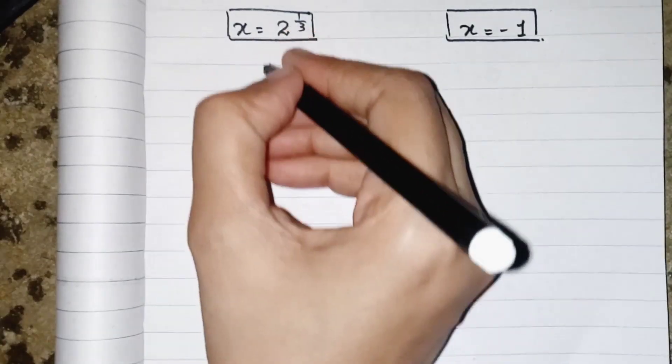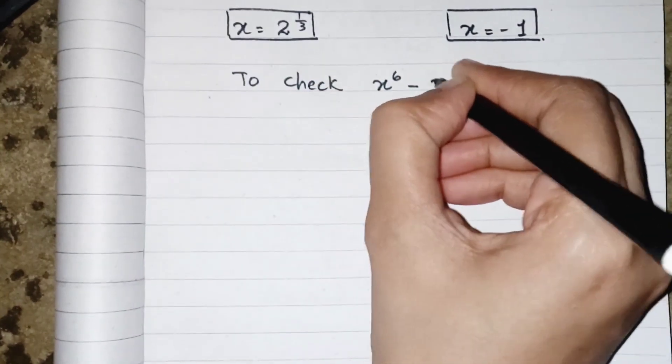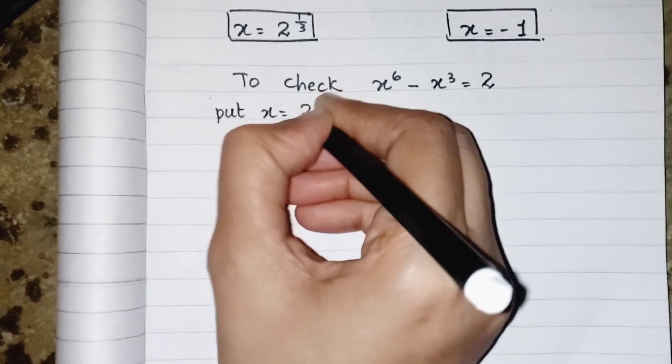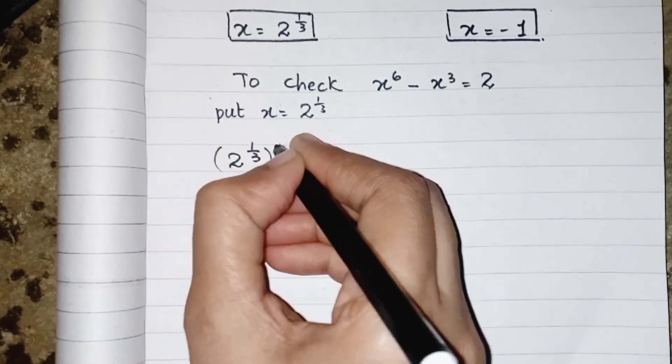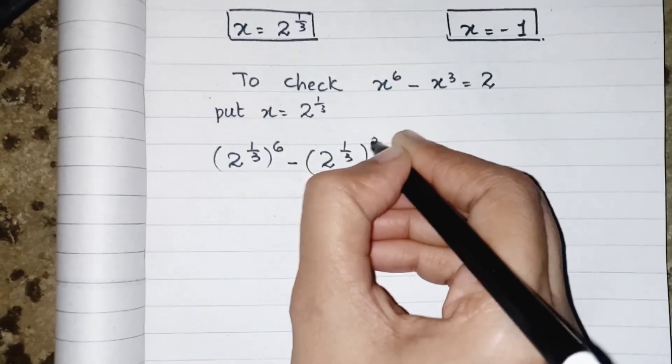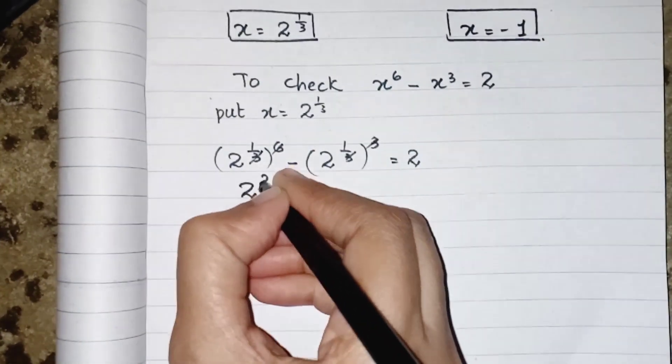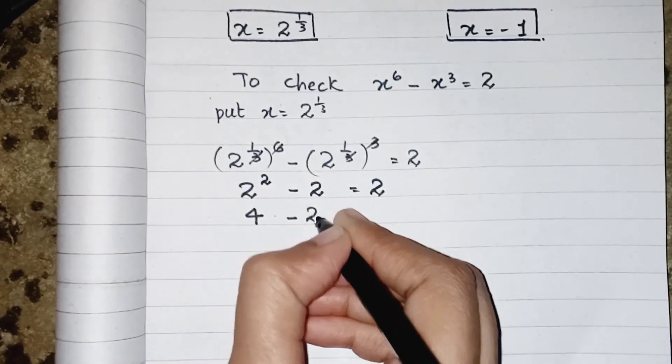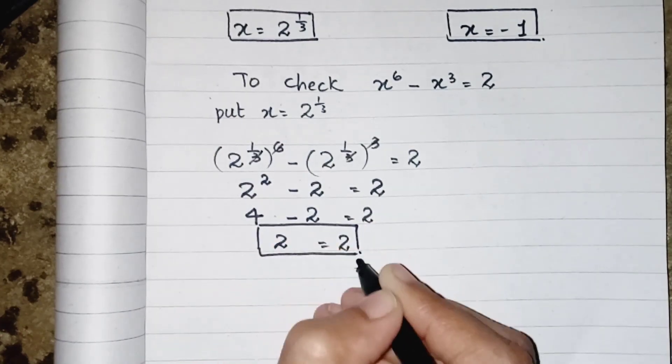So we can just simply write to check x power 6 minus x power 3 equals to 2. Put x equals to 2's power 1 upon 3. So in place of this x, I will write 2's power 1 upon 3 and the whole power is 6 minus 2's power 1 upon 3 and the whole power will be cube equals to 2. These will be cancelled out. So now we get 2's power 2 minus 2 equals to 2. 2's power 2 means 4. 4 minus 2 equals to 2. So 2 equals to 2. This verifies the answer.